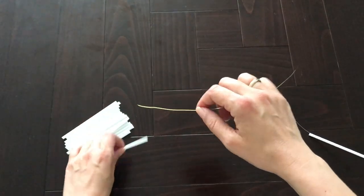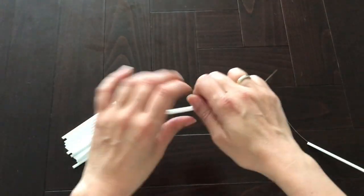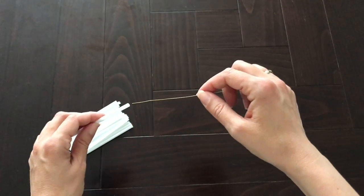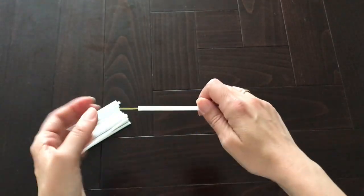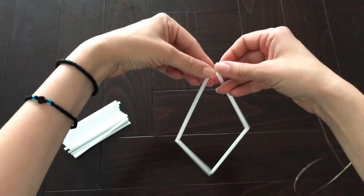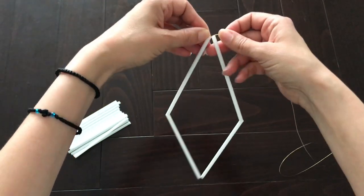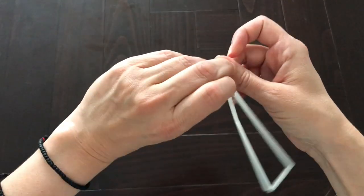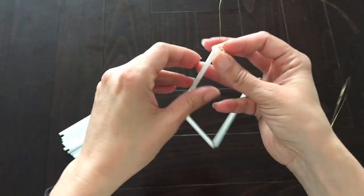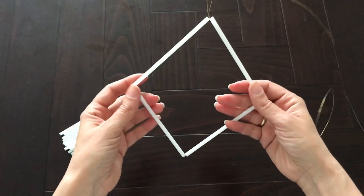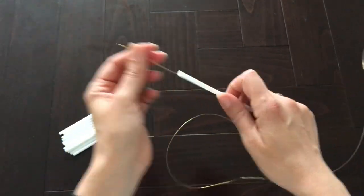Then you need to thread four pieces of straws onto your wire and leave about two inches hanging from the last straw. Form a diamond shape and wrap the wire to hold in place.